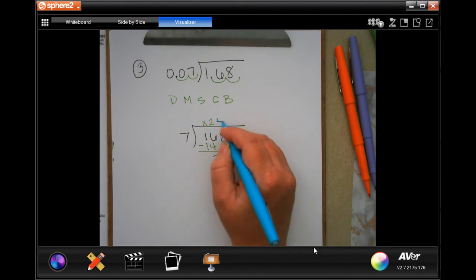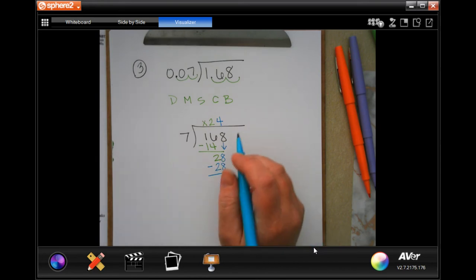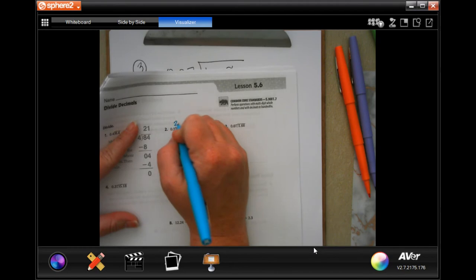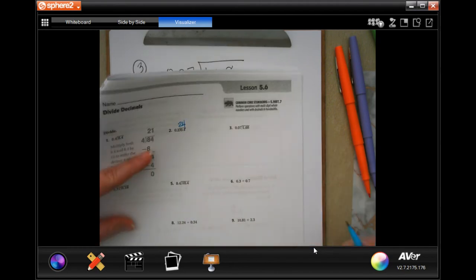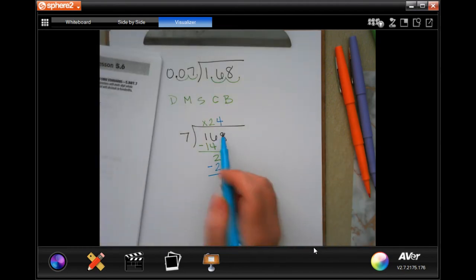Seven goes into 28 four times. Four times seven is 28. I subtract. I get zero. So now my answer is going to be 24. You still need to write your work down.